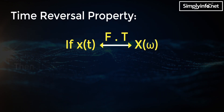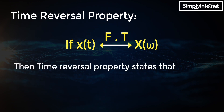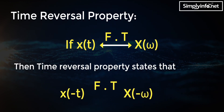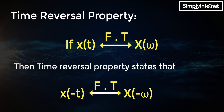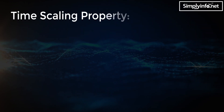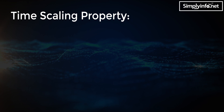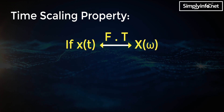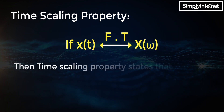Time reversal property: if Fourier transform of x(t) is X(ω), then the time reversal property states that Fourier transform of x(−t) is equal to X(−ω).